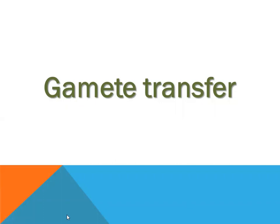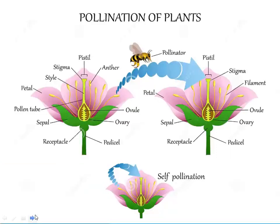Gamete transfer — as we know there is the transfer of gametes. In case of plants there is pollination with the help of an agent. It may be honeybees, it may be animals, it may be birds, it may be water, it may be air, or it may be some other agency. When an agent is involved, it is called as cross-pollination.